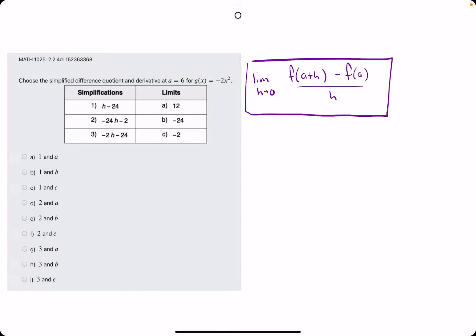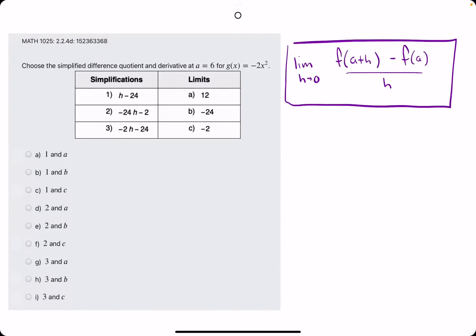Okie dokie. In this problem, they say choose the simplified difference quotient and derivative at a equals 6 for this function.